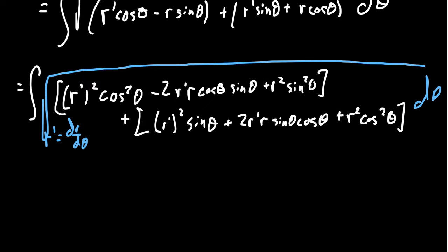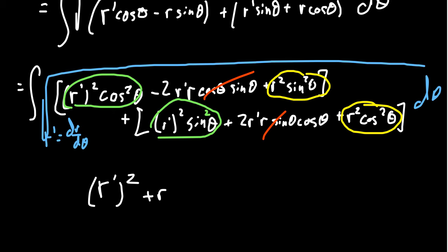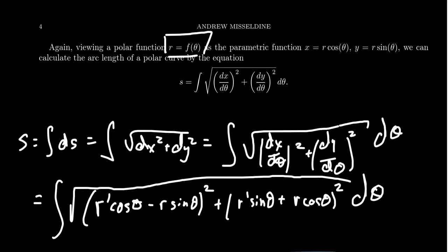There are going to be some nice combinations. r prime squared cosine squared plus r prime squared sine squared combine by the Pythagorean identity to just r prime squared. The negative 2r prime r cosine sine and positive 2r prime r sine cosine terms cancel out. And r squared sine squared plus r squared cosine squared combine to just r squared. Voila — it simplifies very nicely!